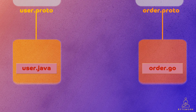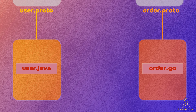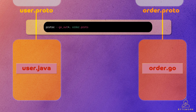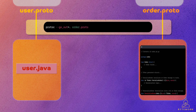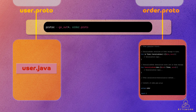Next, we generate the gRPC code based on the defined protocol buffers. We can use the protocol buffers compiler, protoc, along with the gRPC plugin to generate code for the programming language of your choice. Here is a simplified example of how the generated Go code for order.proto might look like.